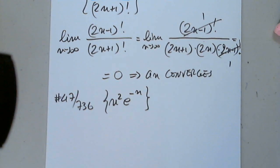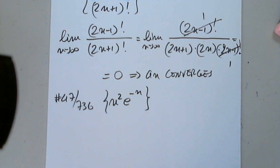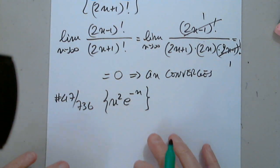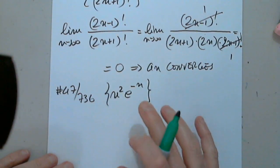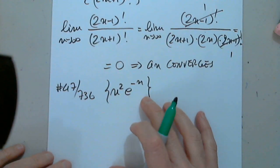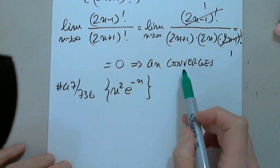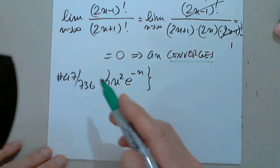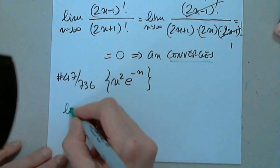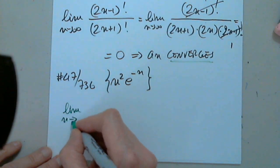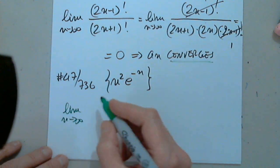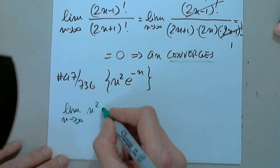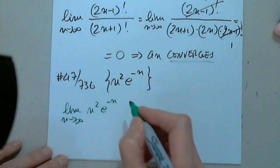We're back trying to finish 11.1. This is our new general term and we're asked to identify whether it's convergent or not. So let's start with the limit as n approaches infinity of n squared e to the negative n.